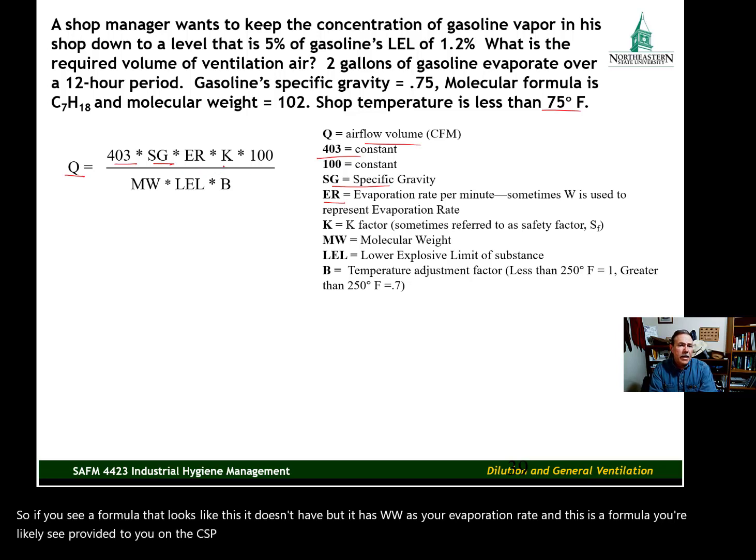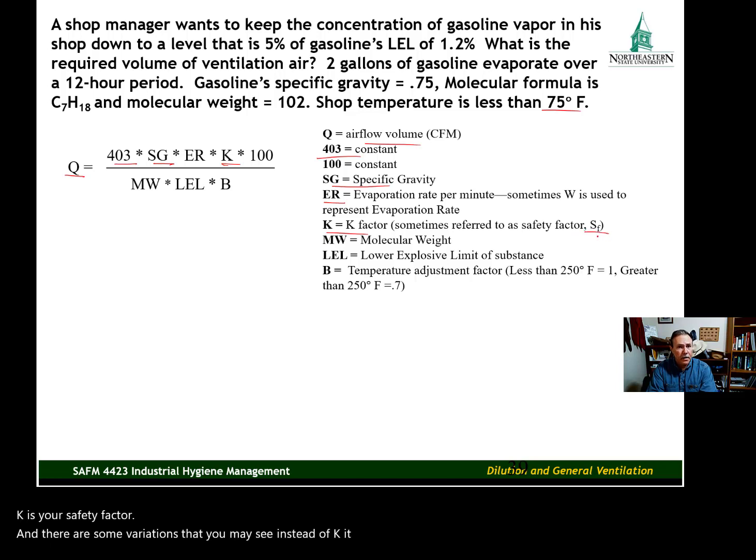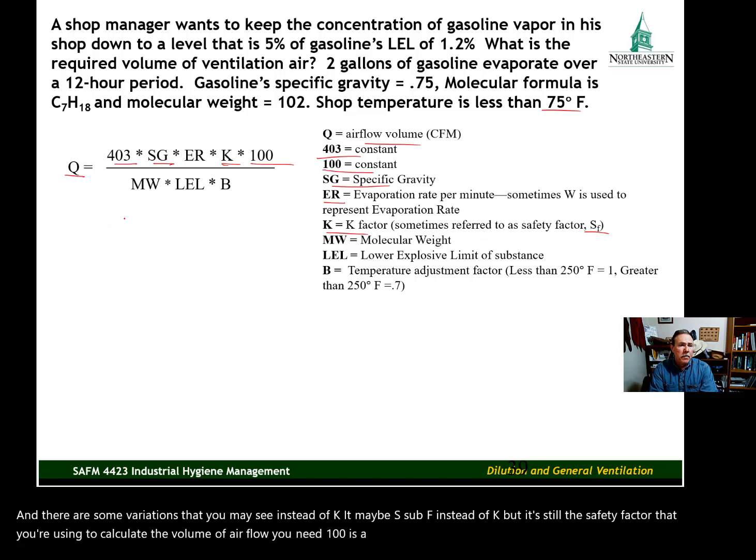K is your safety factor. There are some variations—you may see S sub F instead of K, but it's still the safety factor that you're using to calculate the volume of airflow you need. 100 is a constant, MW is molecular weight, and LEL is the lower explosive limit of the substance.